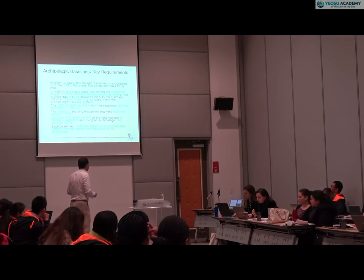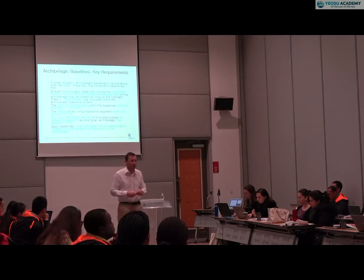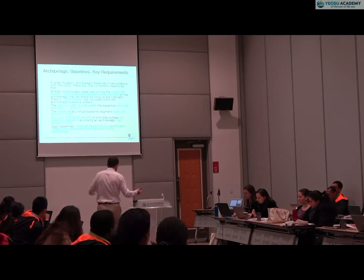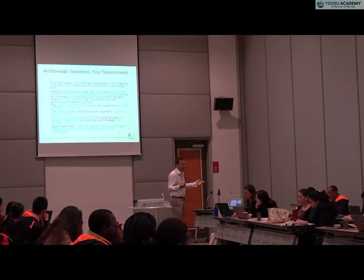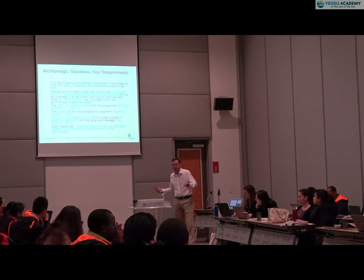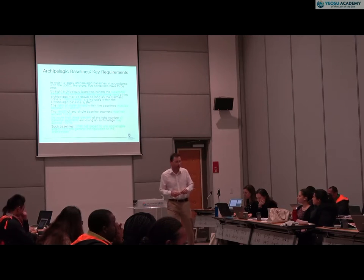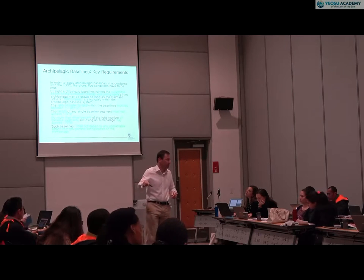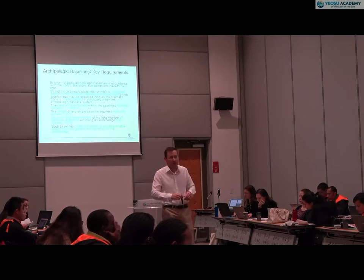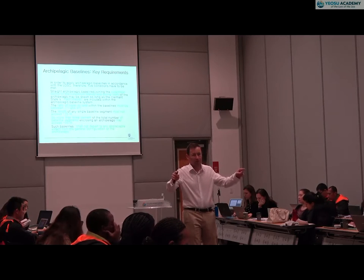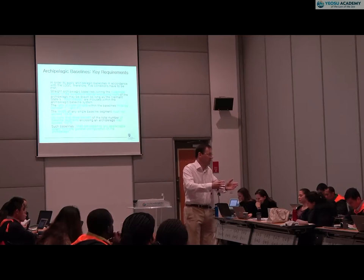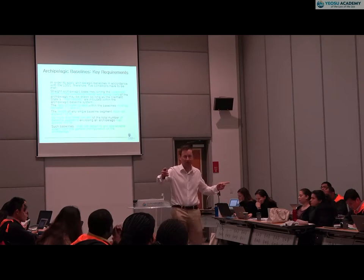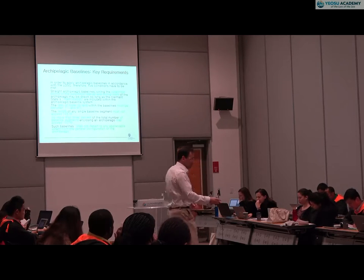There are also length limitations — no single segment should be more than 125 nautical miles long. That also stops dispersed archipelagos from being linked into an archipelagic baseline system. And there's a 3% rule: no more than 3% of your archipelagic baselines should be more than 100 nautical miles long. That's somewhat of an illusion in terms of being restrictive, because who's drawing the baselines? The archipelagic state. You can take a long archipelagic baseline segment and break it up into small portions, changing the number of segments and therefore the percentage.